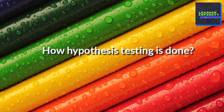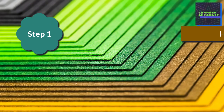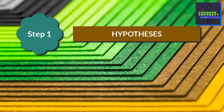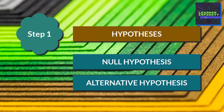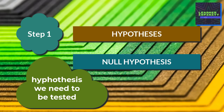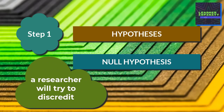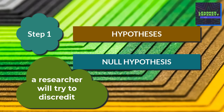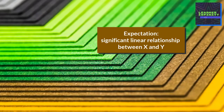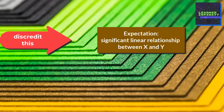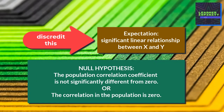The first step is to formulate the hypothesis. We must state two hypotheses: the null hypothesis and the alternative hypothesis. The null hypothesis is the hypothesis that needs to be tested. It states the exact opposite of what a researcher expects or predicts — it is the hypothesis that a researcher will try to discredit. Since we expect a significant linear relationship between x and y, we will discredit it by having this null hypothesis: the population correlation coefficient is not significantly different from zero, or the correlation in the population is zero.